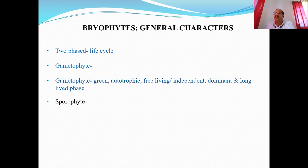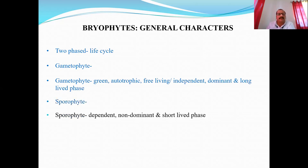The second phase is the sporophyte, which is exactly opposite to the gametophyte. It is not free-living; it is dependent, non-dominant, and short-lived. So the two phases in the life cycle are gametophyte — independent, dominant, long-lived — and sporophyte — dependent, non-dominant, short-lived. We will discuss these in more detail after some slides.